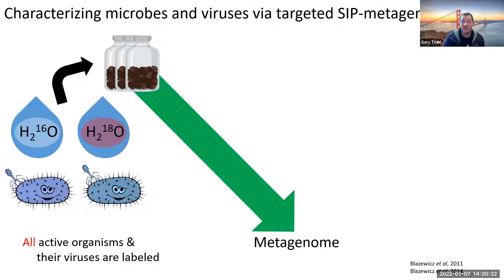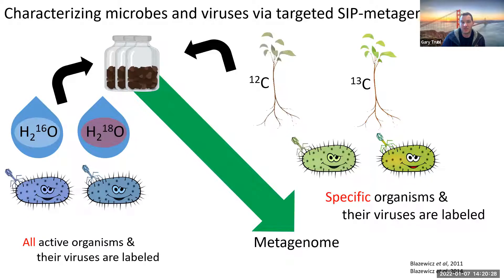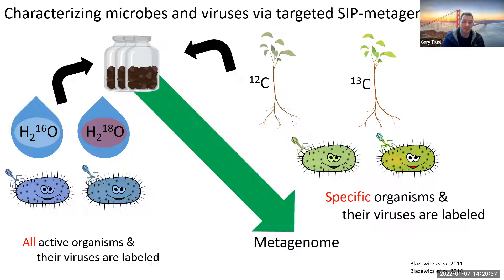For viruses, if they're infecting a host, they will also get labeled. In another example, I'll show how we can look at substrate specificity. Here you have plant biomass which usually has normal carbon, 12C. We can grow plant biomass under 13CO2 so it's enriched - the majority of the plant is 13C enriched. We can then look at who's degrading that plant biomass, because any organisms breaking it down will become 13C enriched, and so will their viruses.